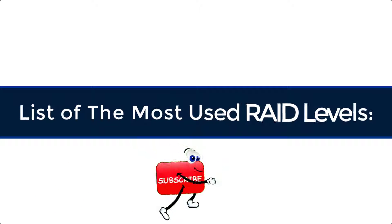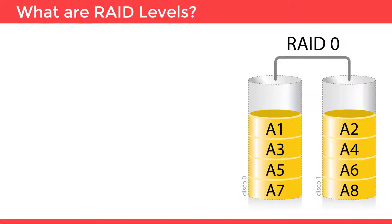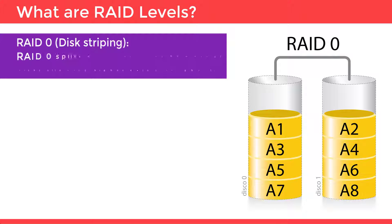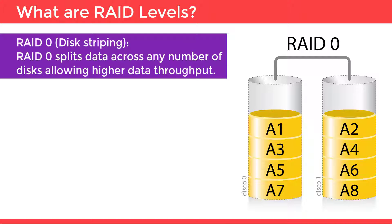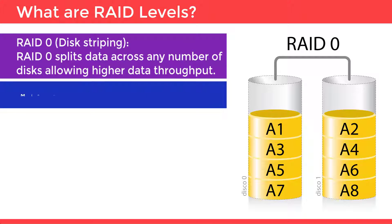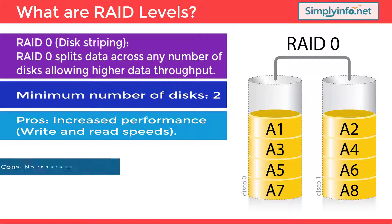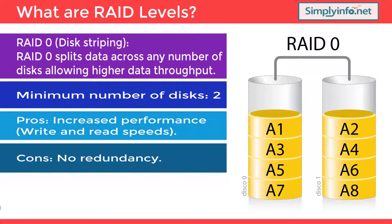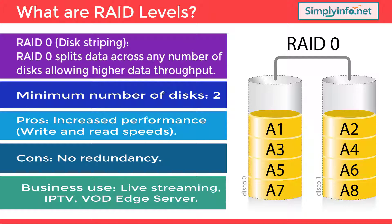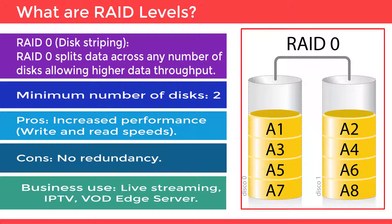Here is a list of the most used RAID levels. RAID 0, Disk Striping: RAID 0 splits data across any number of disks, allowing higher data throughput. The minimum number of disks required is two. Pros: increased performance, both write and read speeds. Cons: no redundancy. Business use includes live streaming, IPTV, video on demand, and edge servers. Here is an image that shows an example of how RAID 0 is configured.